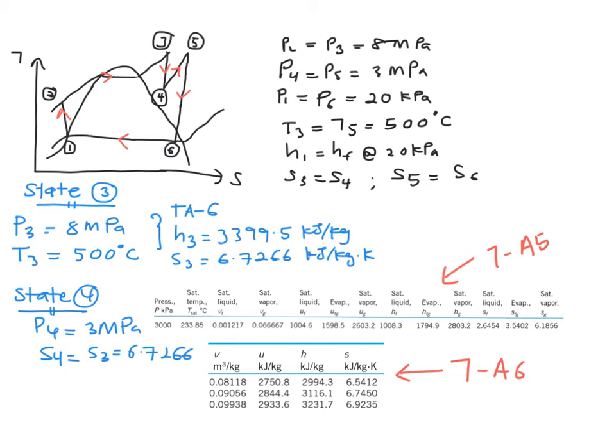However, when you check out your table A6 with the pressure of 3 MPa, you will see that you don't have the exact value of 6.7. However, you have in the range of 6.5 and 6.74. So therefore, you need to use the interpolation method in order to obtain your H4.